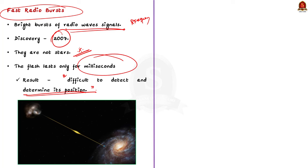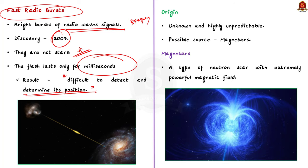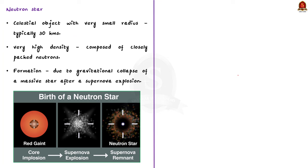Let us see what is the origin of this phenomenon. Generally, FRBs are spotted in various parts of the universe, so their origins are unknown and their appearance is highly unpredictable. But astronomers say that magnetars could be a likely source of FRBs. Magnetars are a type of neutron star with an extremely powerful magnetic field. A neutron star is a celestial object with a very small radius, typically about 30 km, with very high density, composed of closely packed neutrons, formed by the gravitational collapse of a massive star after a supernova explosion.